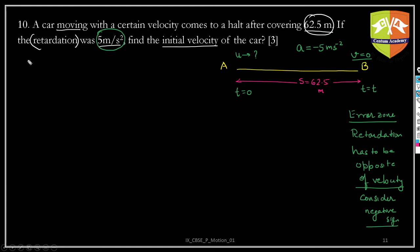Now let's go ahead and solve. U is unknown, v is clearly 0, a is clearly minus 5 meter per second squared, and s is given 62.5 meter. Which equation of motion you will use? We have v equals u plus at, and s equals ut plus half at square. There is no mention of time here. So v square equals u square plus 2as.